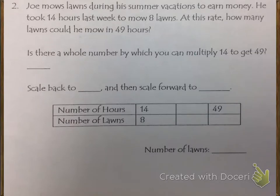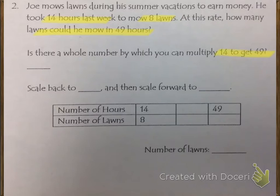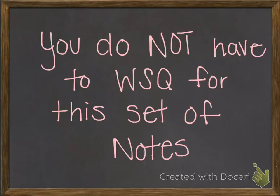Joe mows lawns during his summer vacation to earn money. He took 14 hours last week to mow 8 lawns. At this rate, how many lawns could he mow in 49 hours? I would like you to try to solve this one on your own. Is there a whole number by which you can multiply 14 to get to 49? The answer is no, so we need to scale back. Decide what to scale back and scale forward to find the number of lawns in 49 hours. You have no summary questions for this set, so once you finish number two, you are finished.